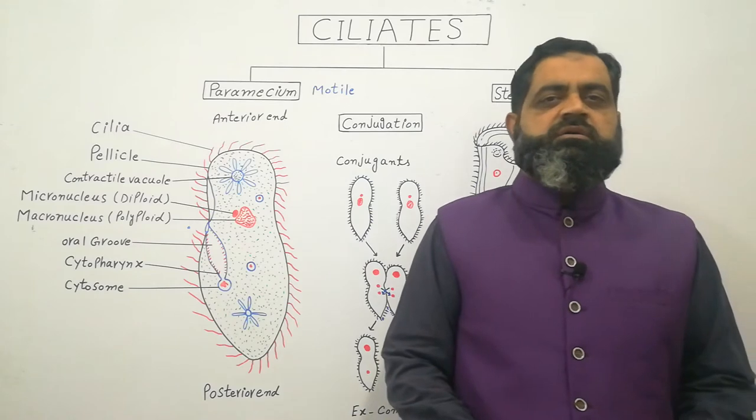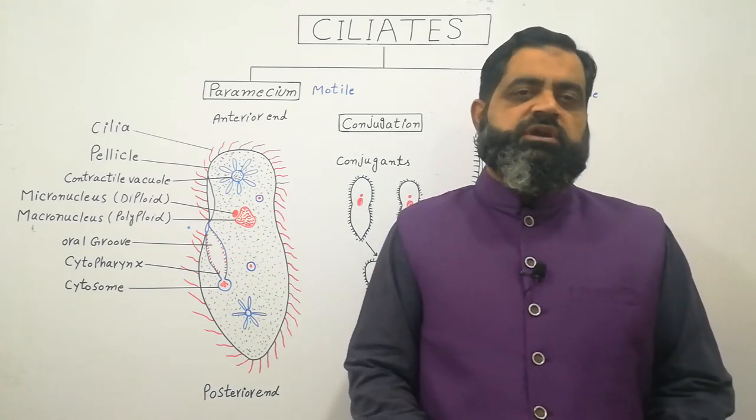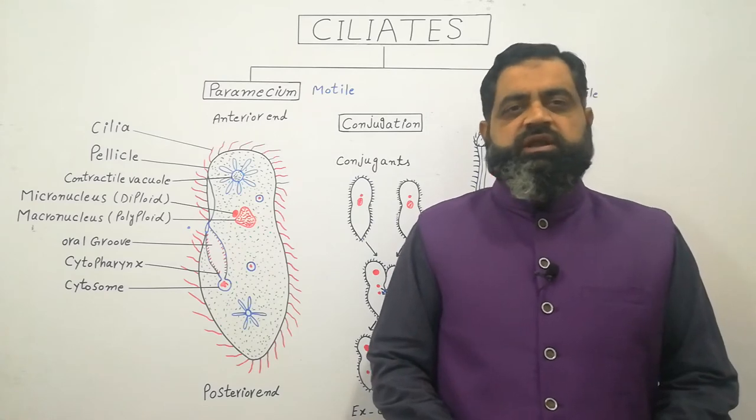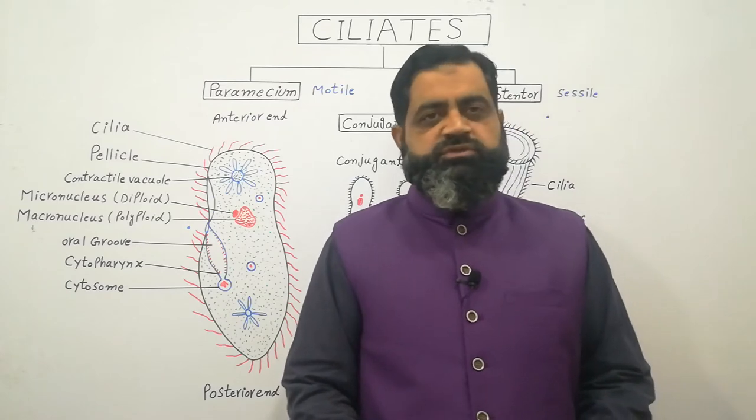Ciliates are microorganisms which belong to kingdom protista. They are known as protists and they belong to a group known as protozoa. So these are protozoans.